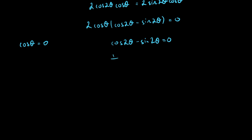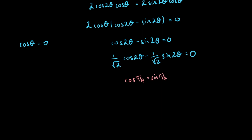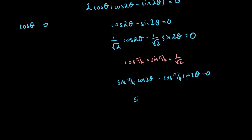Instead, we can avoid that extra work and use the method from the previous video in this series, where we introduce a division by √2. What this does is allow us to simplify the expression using again the sum and difference formulas — using the fact that cos(π/4) equals sin(π/4) equals 1/√2 — and substitute those in, giving us sin(π/4)cos(2θ) take cos(π/4)sin(2θ) equals 0.